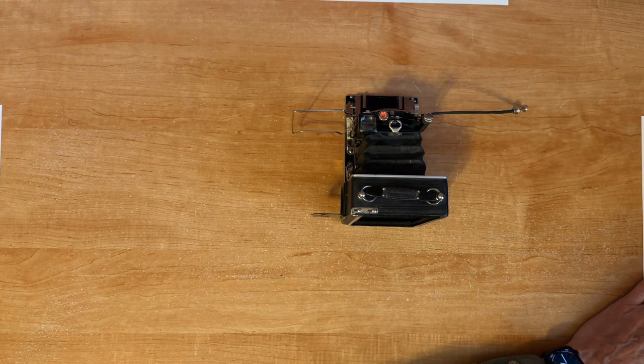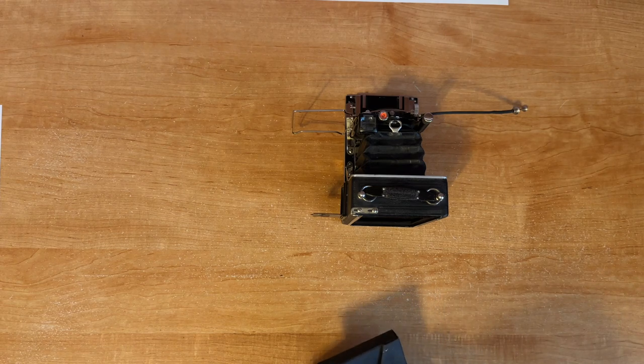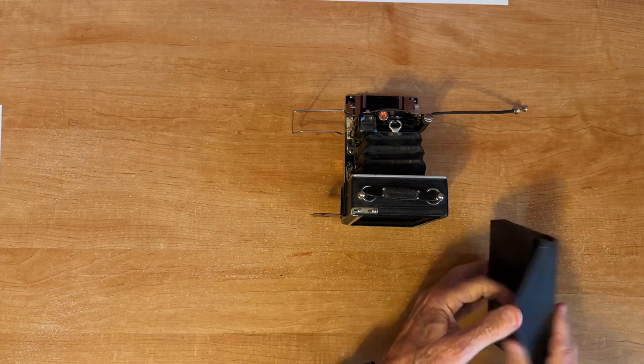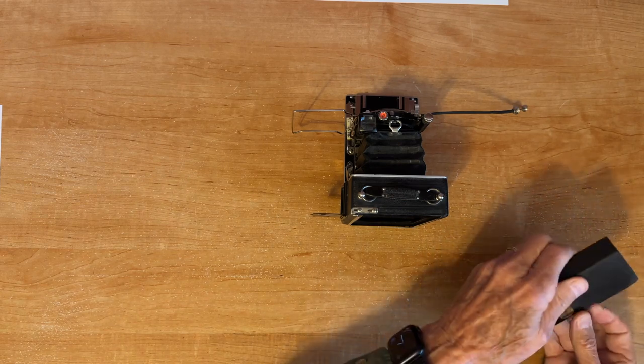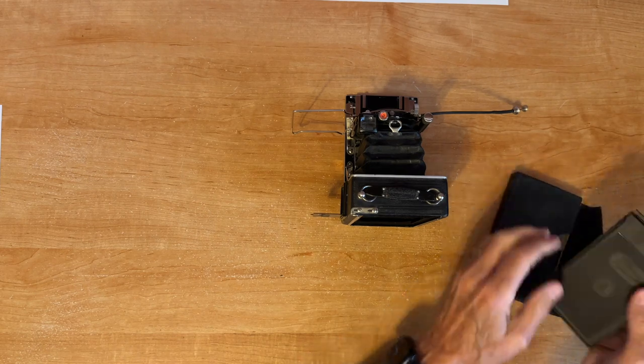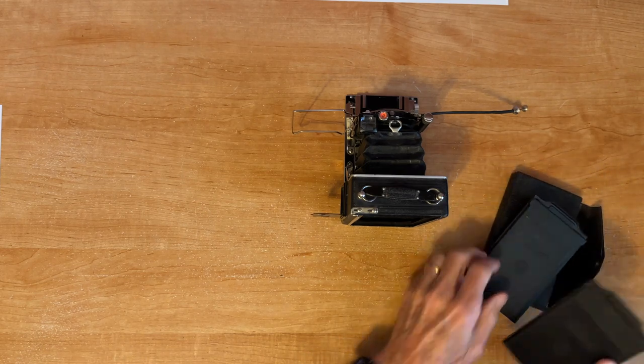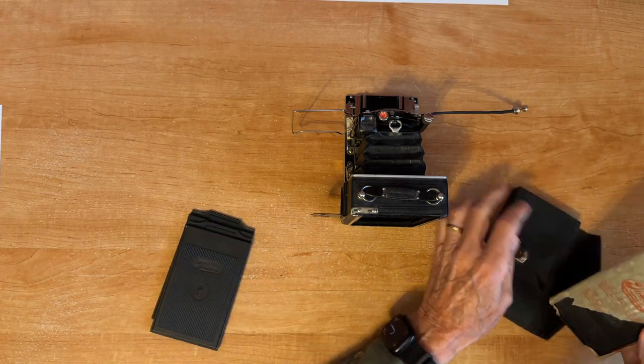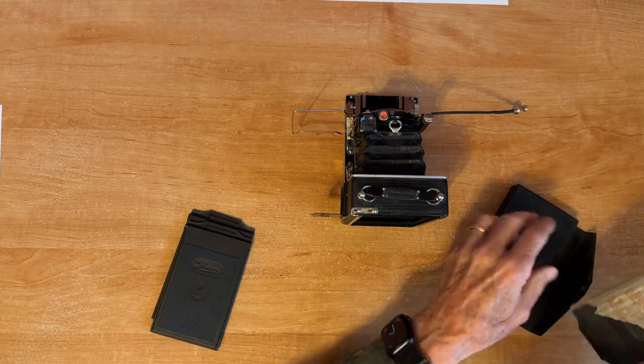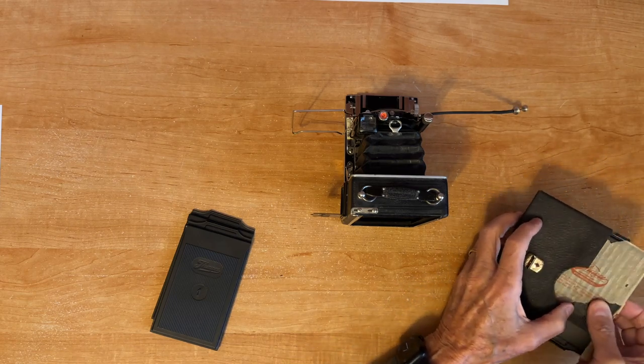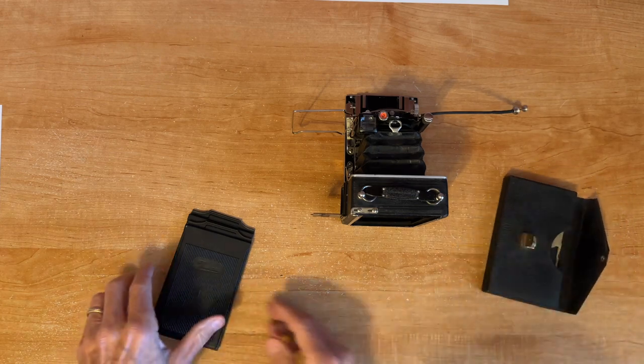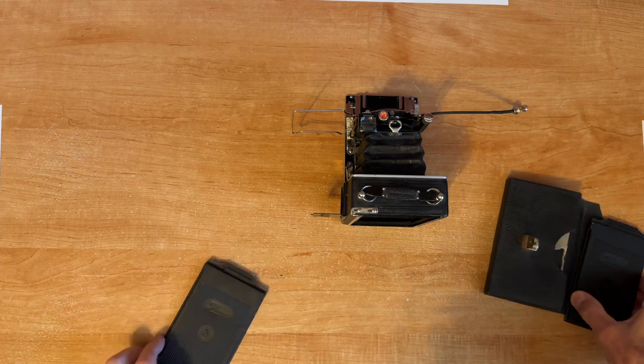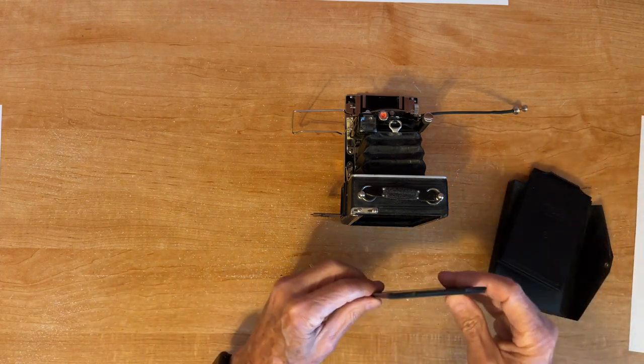So the first accessory you need once you've refocused is you need something to hold film. So this came with a leather case with three film holders in it. And they're numbered. There's number three, number one, and number two. Still had the paper wrapper on it, which I kind of like.